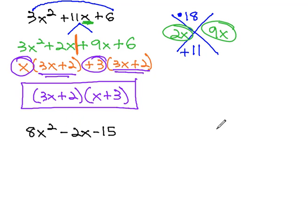Let's try another example to make sure we have this process down. In this problem, A times C is 8 times negative 15, which is negative 120. We want to add to negative 2.